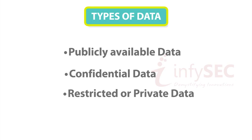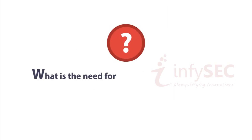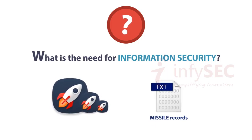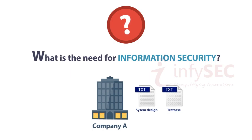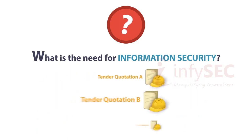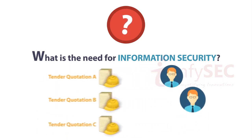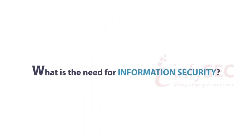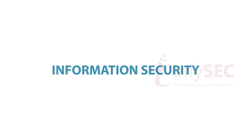Having seen the different types of data — which are nothing but information — what is the need for information security? What if a credit card PIN becomes available to everyone? What if the number of missiles held by a nation is known worldwide? What if the system design and test case for a new product of a company is accessible by their competitor? And what if a tender quotation of all the applicants is accessible by all the other applicants? Of course it is not good to go without securing this information. Let us now get into information security.